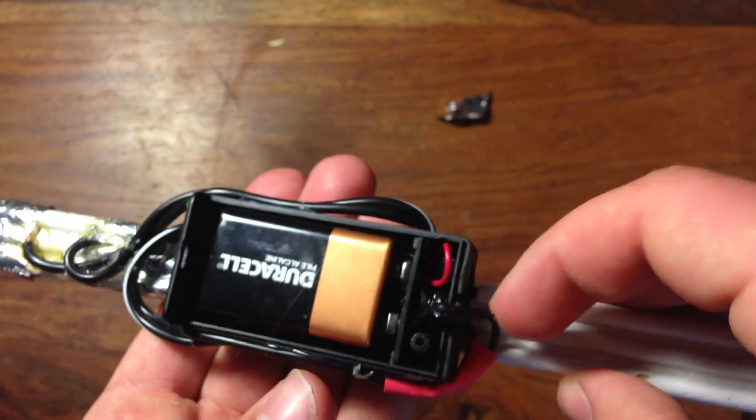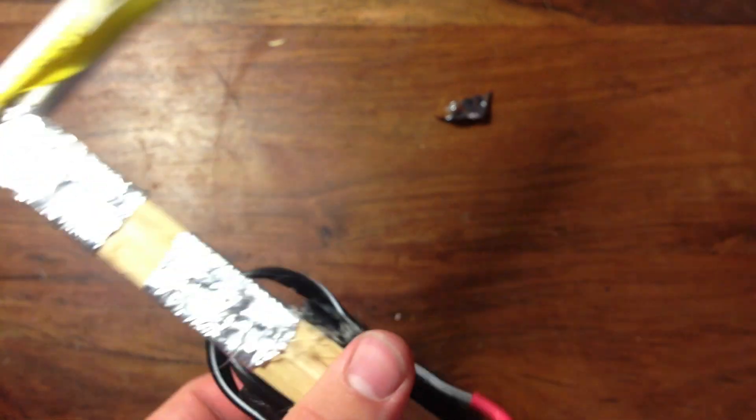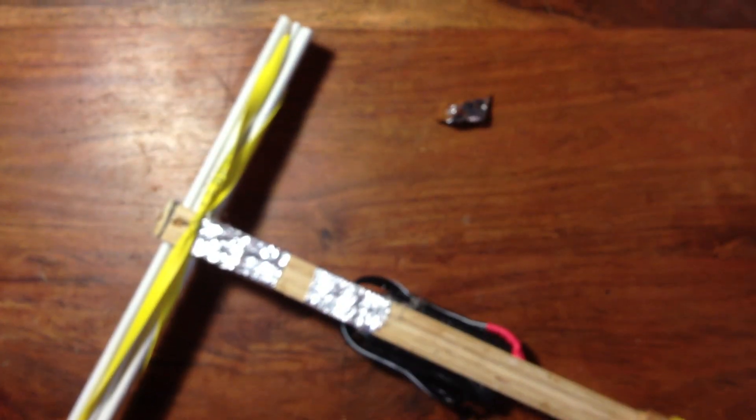Then wrap the tin foil around the crossbow and secure it down with some hot glue. And it's very important that the two pieces of tin foil are not touching.